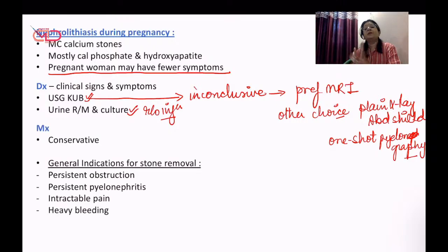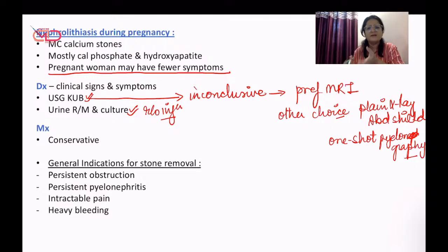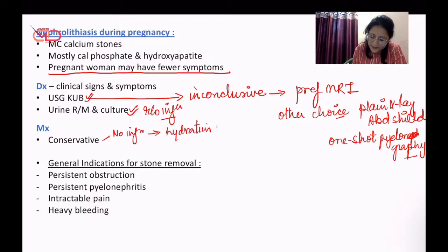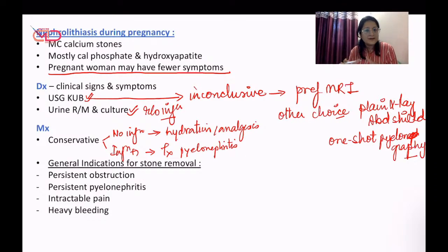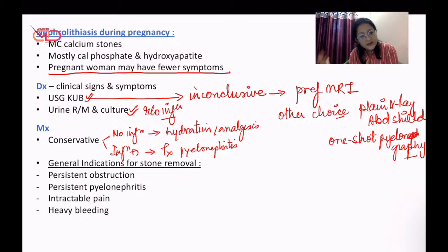Most patients with stone disease in pregnancy are going to be mildly symptomatic, so conservative management should suffice — IV hydration and analgesics for pain relief. If there is no infection, plain hydration and analgesics are good enough. If there is renal infection along with renal stones, we have to add antibiotics and manage it like pyelonephritis. The general indications for stone removal are the same as for a non-pregnant patient: persistent obstruction causing back pressure changes and renal dysfunction, persistent pyelonephritis, or intractable pain.